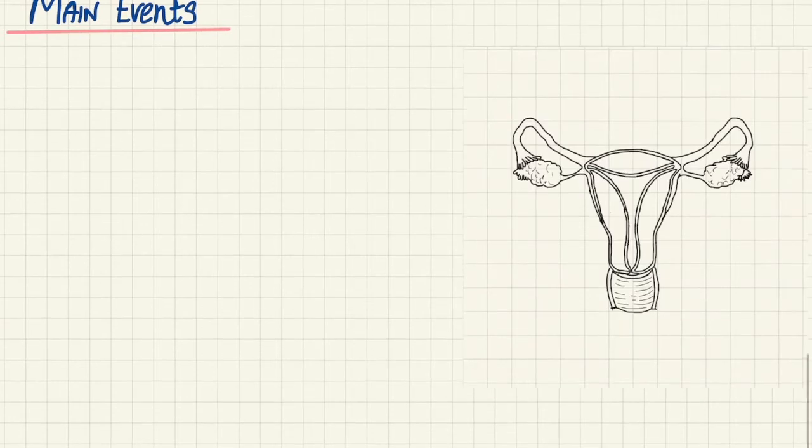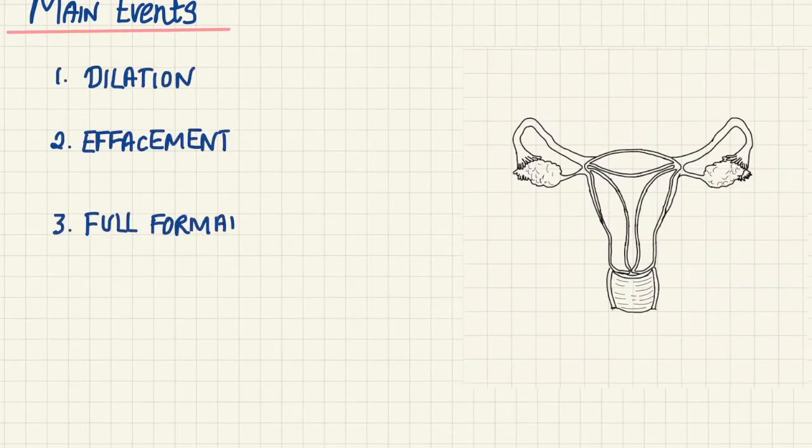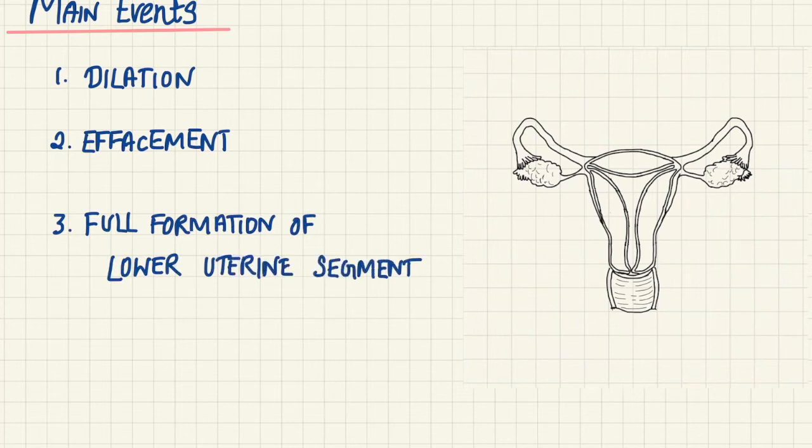The main events of the first stage of labor can be split into three different areas: first dilation, second effacement of cervix, and full formation of the lower uterine segment.